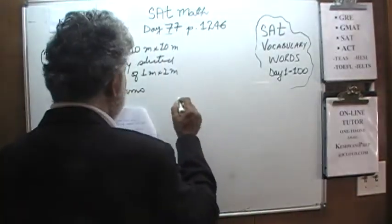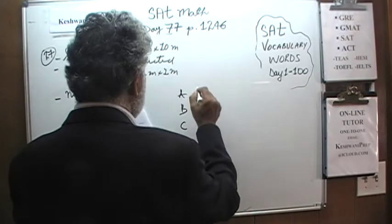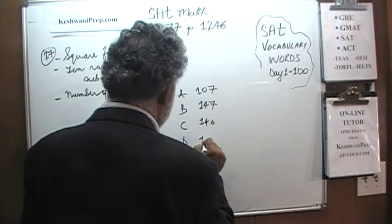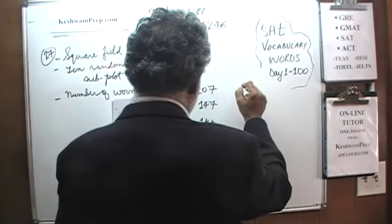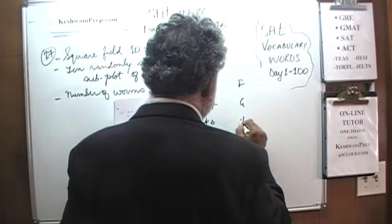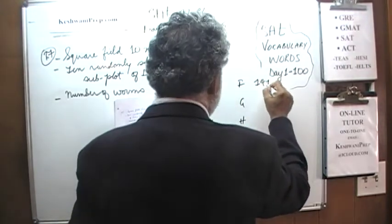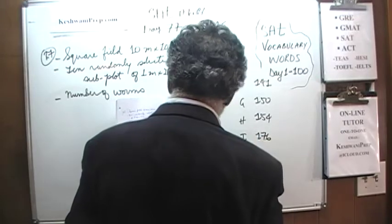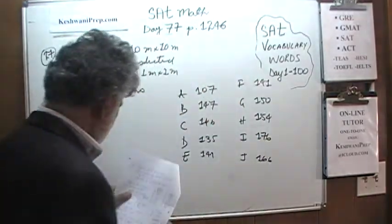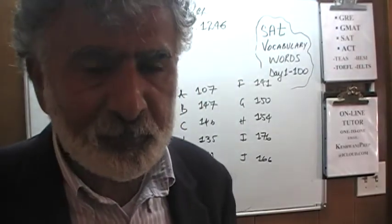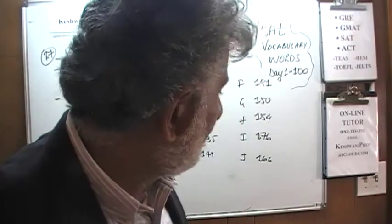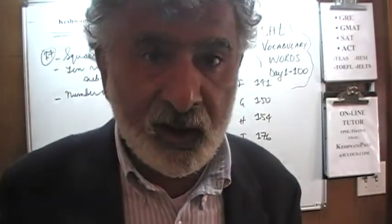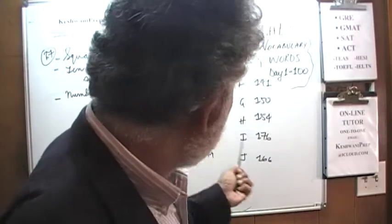The ten subplots yielded the following worm counts — A through E: 107, 147, 146, 135, 149; and F through J: 141, 150, 154, 176, 166. Because these 10 subplots were chosen at random, this is a representative sample of the land. The question is: how many total worms can we expect to find in the entire 10×10 meter field based on these 10 observations?